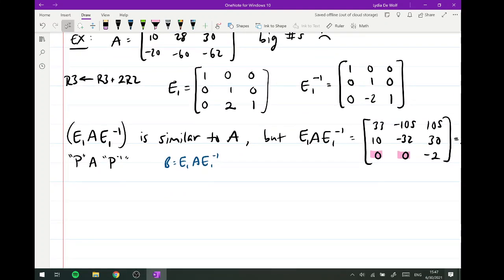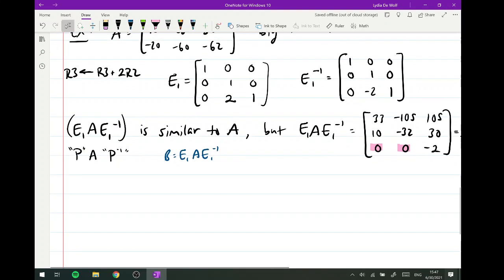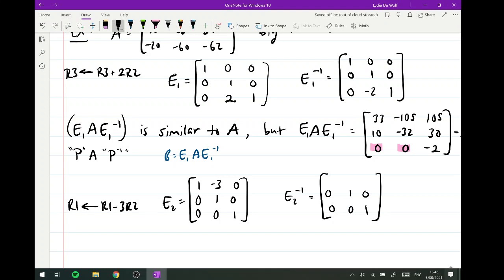But if you actually do that multiplication, you get a nicer matrix. So if you do the multiplication, you would get 33, negative 105, 105, 10, negative 32, 30, and then 0, 0, negative 2. So all of a sudden, these zeros have appeared. We love zeros. They make life very easy. I'm going to name this guy B. So that means that B equals E1 A E1 inverse. And if you think of those E's as like being P's, this is exactly what it looks like to say that those two matrices are similar.